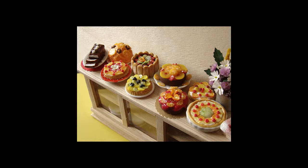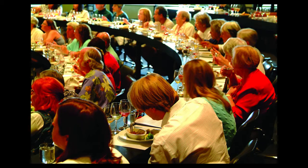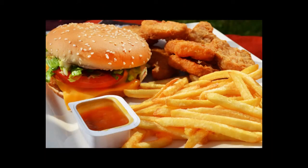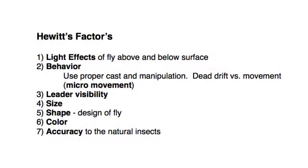Even the pupa has several sub-stages that the trout may key in on, so the trout does have to make choices. Just like everybody at a banquet may not choose the exact same meal, trout, even in the same location of the stream, may not choose the exact same organism or stage. Even if eating the exact same stage, people and trout may be doing it for different reasons or triggers. I feel that currently Hewitt's factors are the best list of triggers and a reasonable order of importance.